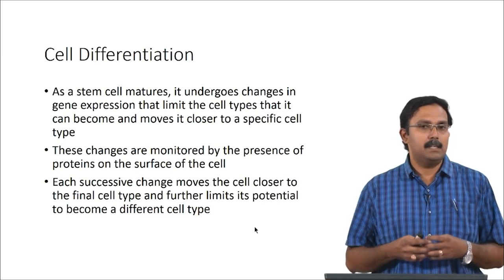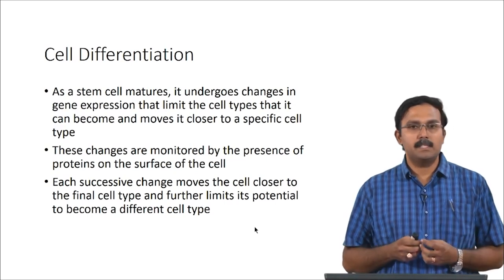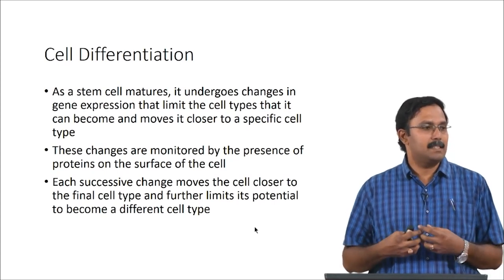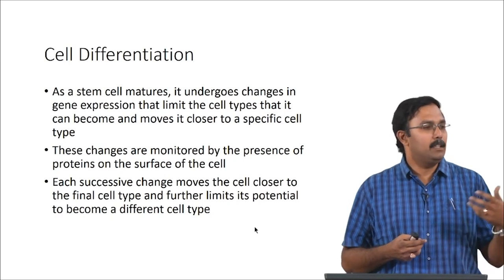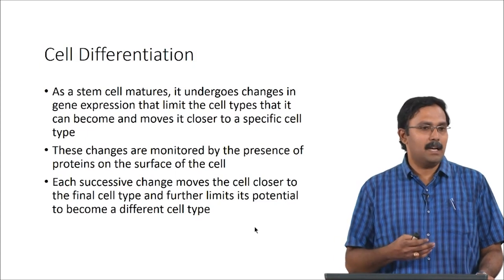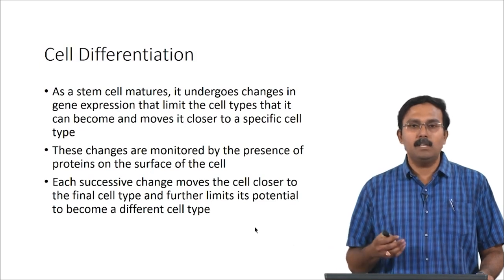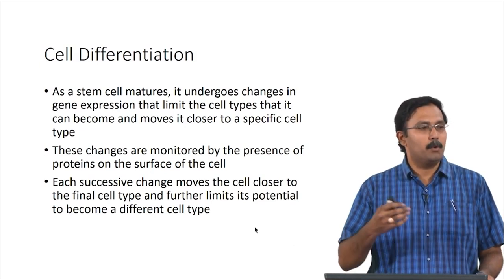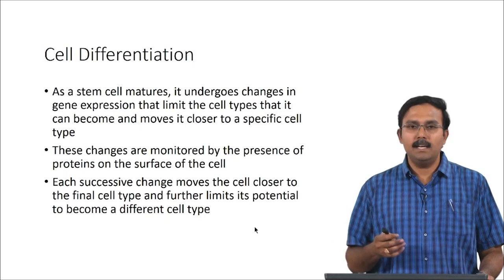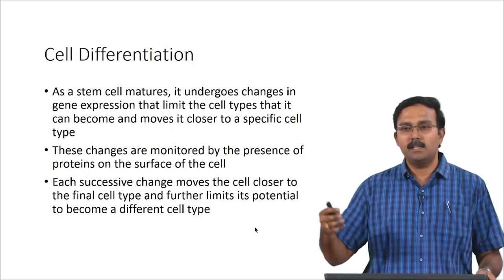What actually happens in a differentiation process is: as a stem cell matures, it undergoes changes in its gene expression that limit the cell types it can become. There are changes inside the cell which make sure it is beginning to acquire some of the functionalities of the differentiated cells, and it starts moving closer towards the final cell type. These changes can be monitored by the presence of proteins on the surface — surface markers and receptors which are expressed can be used to identify whether the cell is remaining as a stem cell or moving closer towards the differentiated cell.